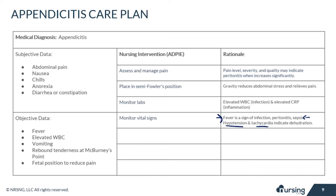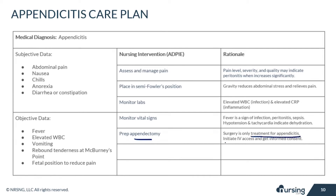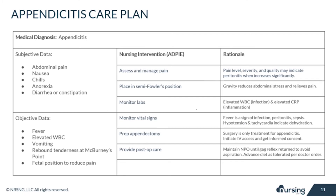Hypotension and tachycardia indicate dehydration. You will prep the patient for an appendectomy, because surgery to remove the appendix is the only treatment for appendicitis — you have to get it out. Initiate IV access and get informed consent from your patient. After surgery, provide post-op care. Your patient will need to maintain NPO status until their gag reflex returns to avoid aspiration. Then advance their diet as tolerated per doctor's order.